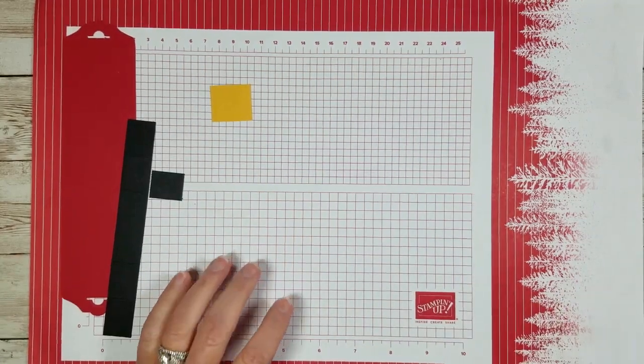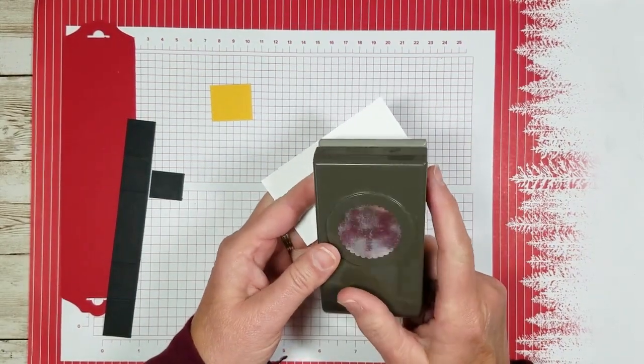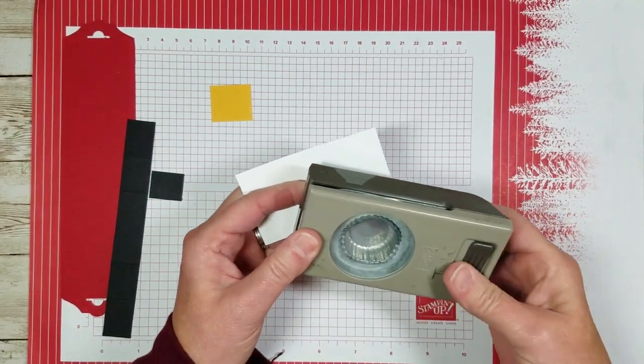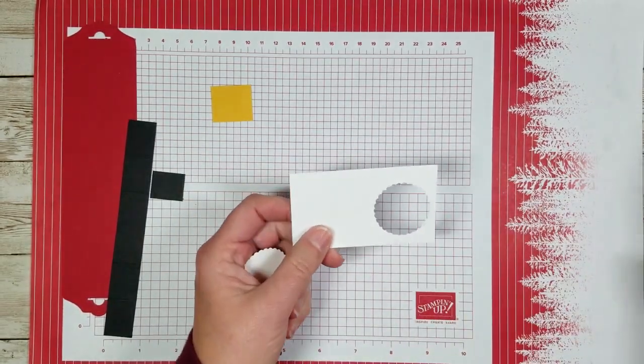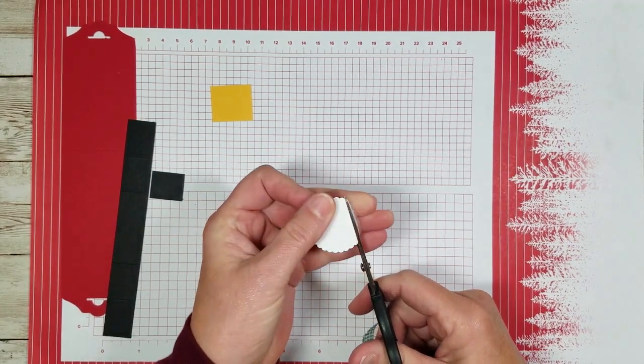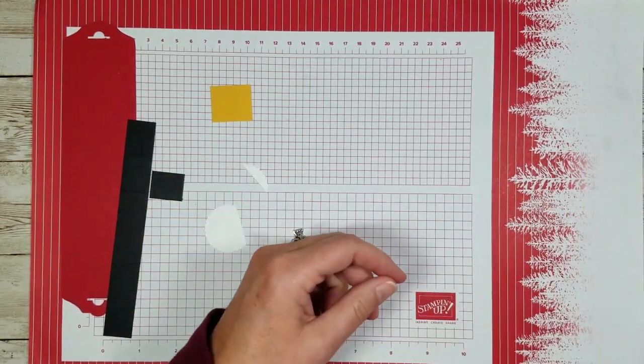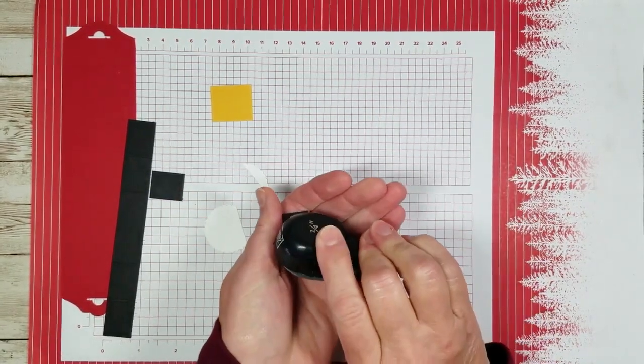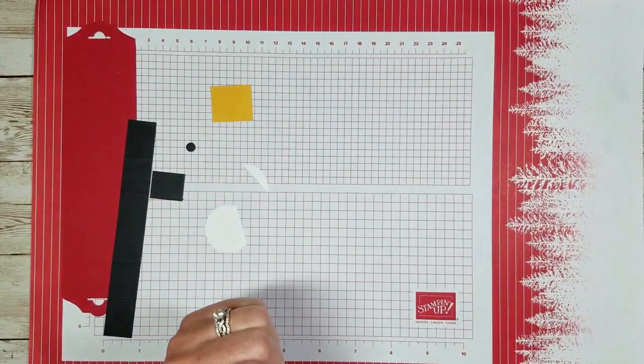You also need to punch out a scallop circle from your piece of white. I'm going to use the one and three-eighths inch scallop circle, but any kind of scallop circle will work as long as it's about that size. You're going to cut a little bit off at the top of it. You also are going to need a fourth inch black circle because I think he needs a button on his suit.